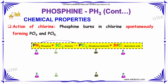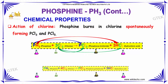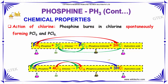Action of chlorine: Phosphine with chlorine will give phosphorus trichloride and hydrochloric acid. In excess of chlorine, it gives phosphorus pentachloride and hydrochloric acid.